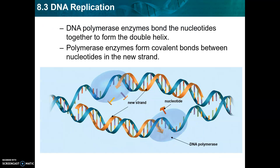After primase is done and there is a primer produced using that old DNA strand, DNA polymerase is going to come around as the builder enzyme and is going to bond the nucleotides together to form a new double helix. Polymerase enzymes form covalent bonds between nucleotides in the new strand.